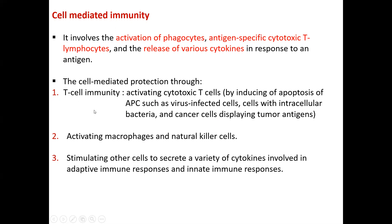T-cell immunity can also activate macrophages and natural killer cells, stimulating other cells to secrete a variety of cytokines involving adaptive and innate immune responses, specifically activation of different kinds of T-helper subtypes. The activation and maturation of B and T lymphocytes are regulated by cytokines produced by macrophages and dendritic cells — the antigen-presenting cells.